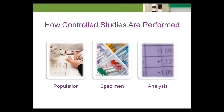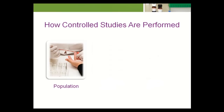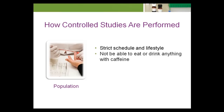As mentioned before, collection of biological variation data is through controlled studies. The areas that are controlled are population, specimen, and analysis. Participants in these studies must adhere to a strict schedule and lifestyle. For instance, they may not be able to eat or drink anything with caffeine for the duration of the study. In addition, they must be available for sample collection on specific dates and times over a period that can last for days or even weeks.